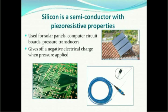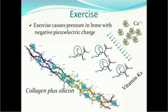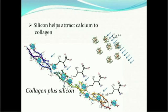Interestingly, silicon is a semiconductor with piezo-resistive properties, and that's why silicon is used for solar panels, computer circuit boards, and pressure transducers — because it gives off a negative electrical charge when pressure is applied. Exercise causes pressure in bone, which also stimulates negative piezoelectric charges, and those charges may be amplified by silicon in the collagen. That's how silicon helps attract calcium to the collagen.